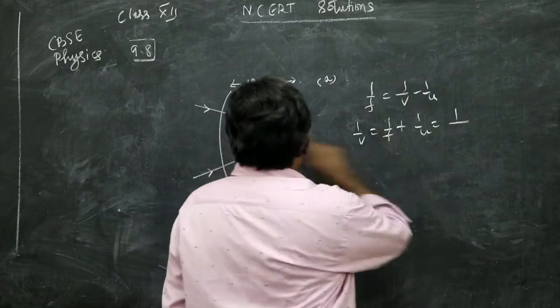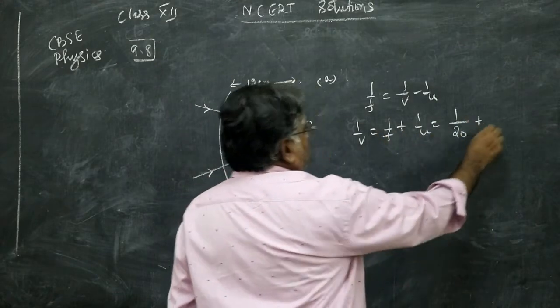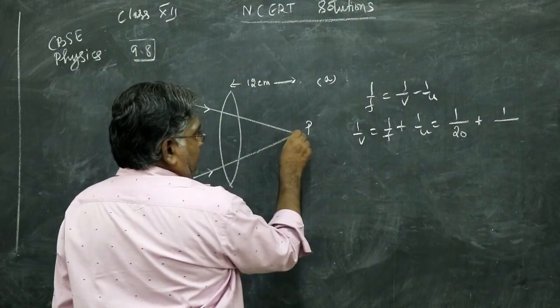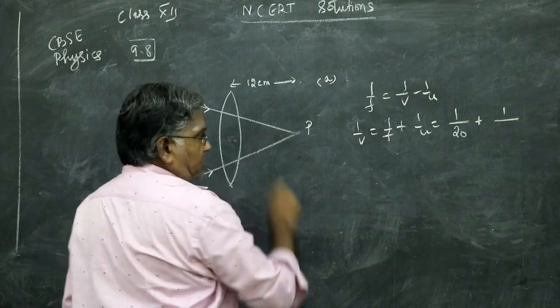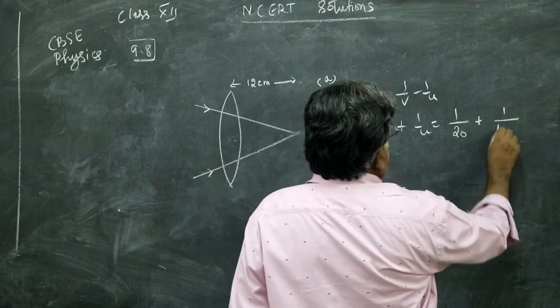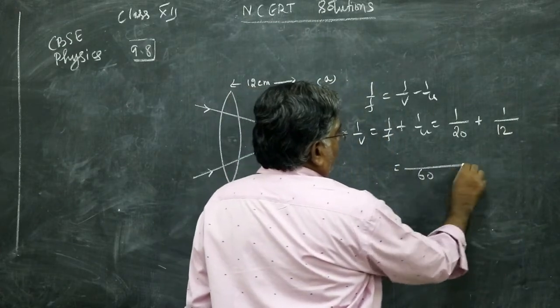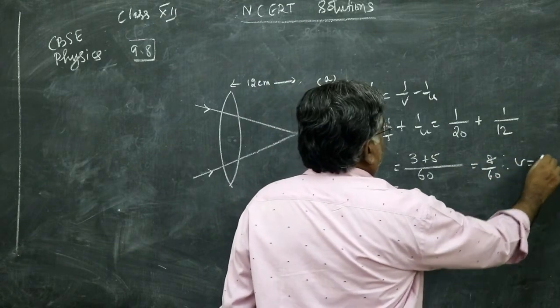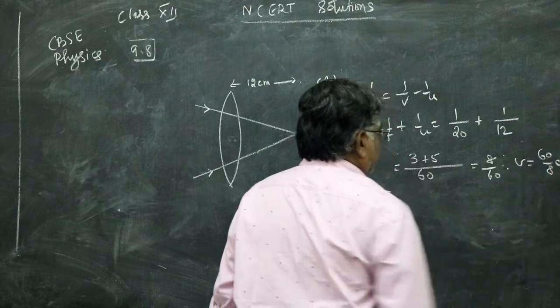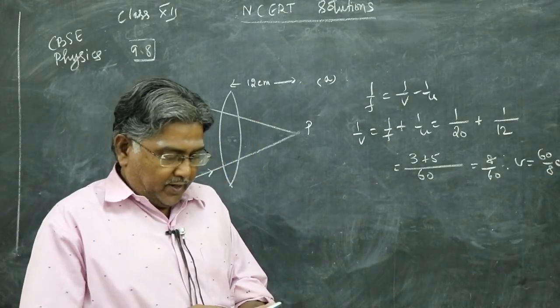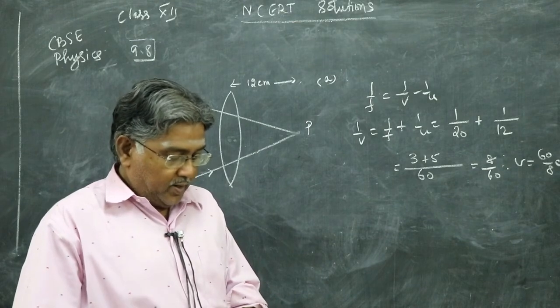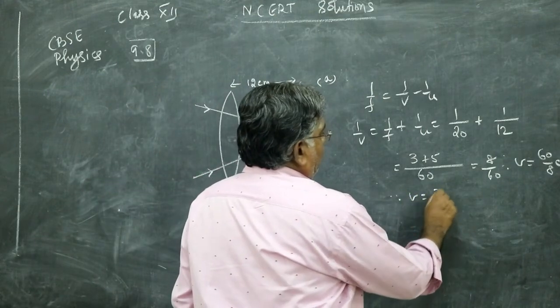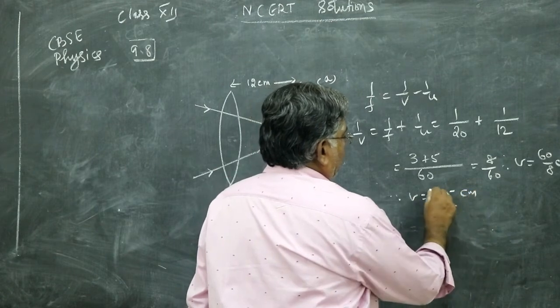So this is plus 20 because convex, plus 1 by 12. This is 12 centimeter that is to be taken as positive because you are measuring the distance of P from the lens along the direction of the incident ray, so u is 12. Take LCM: 3 plus 5, 8 by 60. Therefore V is equal to 60 by 8 centimeter, around 7.5 centimeter.